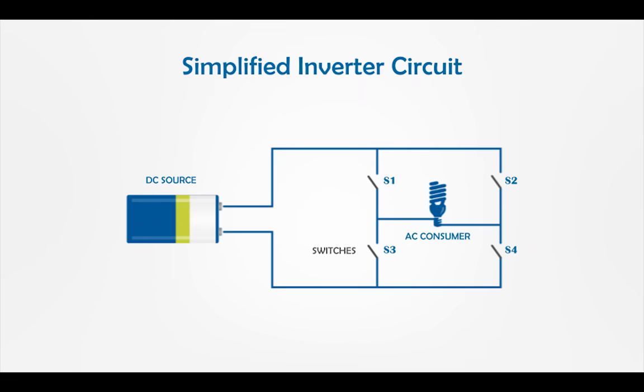To understand how an inverter works, let's have a look at its simplified block diagram. Let's assume we have a battery, and this is the inverter, and we have an AC consumer at the output. In this simplified circuit, the DC source is used to power the AC consumer, which is a lamp here.